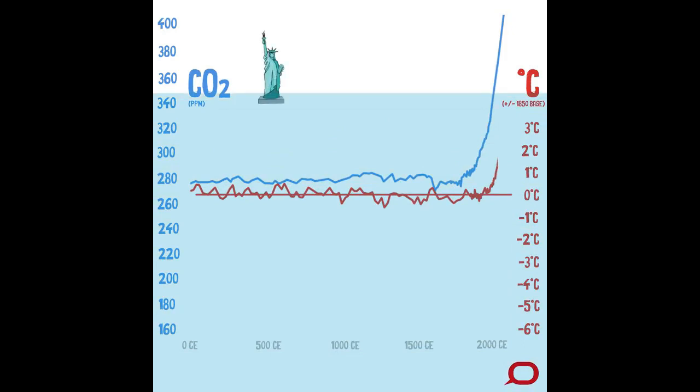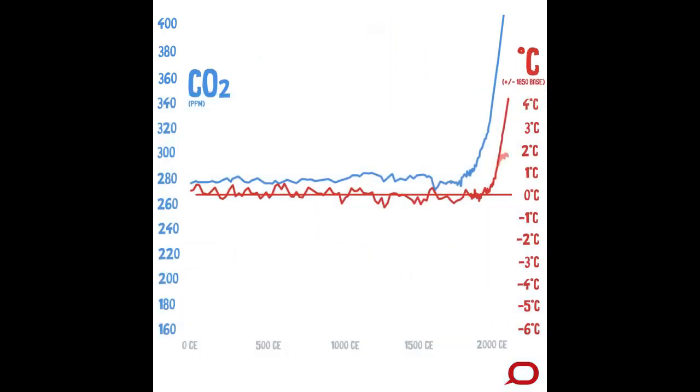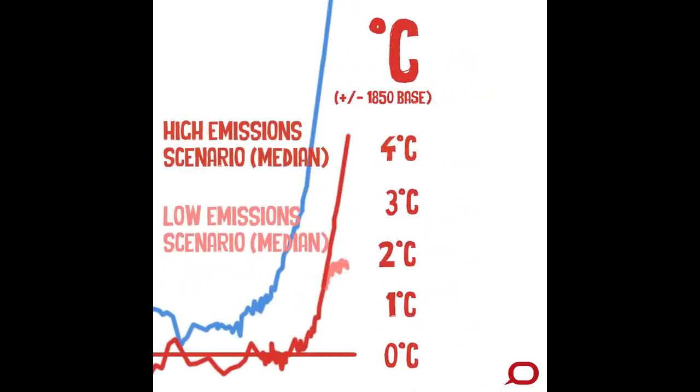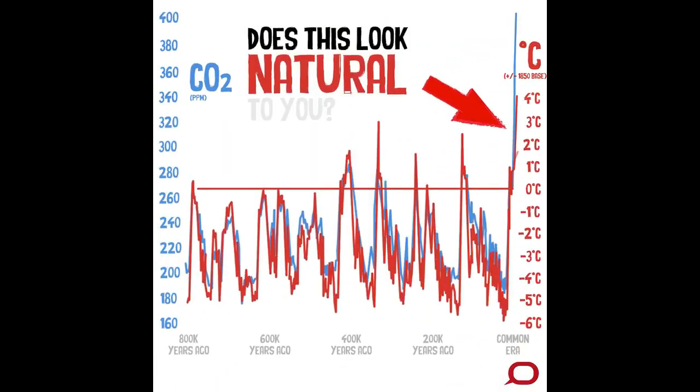On current projections, by 2100 our climate could warm by four degrees Celsius or even more, depending on our actions to cut CO2 levels. So does this look natural to you?